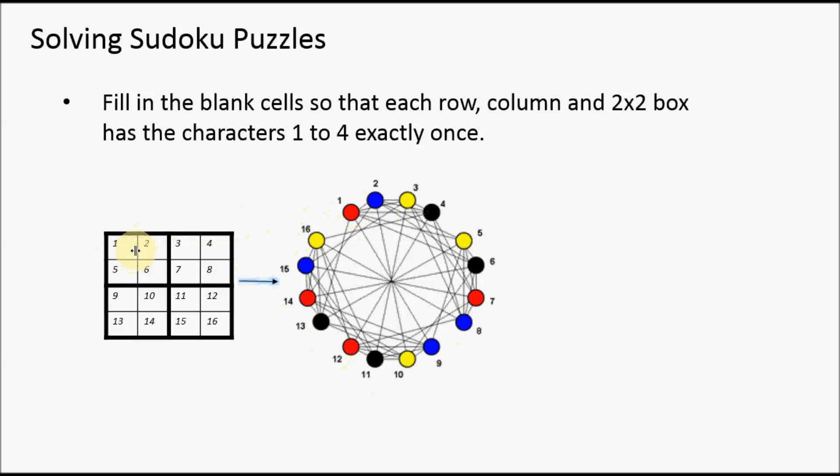Then we need to add edges to this graph. Vertex 1 has an edge between 2, 3, and 4 because they're on the same row.